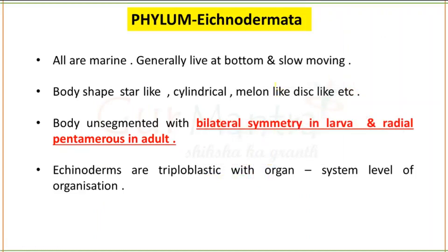If we talk about Echinodermates, these are generally bottom-dwelling or slow-moving animals. If we talk about the body shape, it is star-like. Echinodermata means star, and dermata means body. So body shape can be star-like, cylindrical, melon-like, or disc-like. The body is unsegmented, with bilateral symmetry in the larva. In the larva, bilateral symmetry is present, but in the adult case, radial symmetry is present — radial pentamerous in adult.